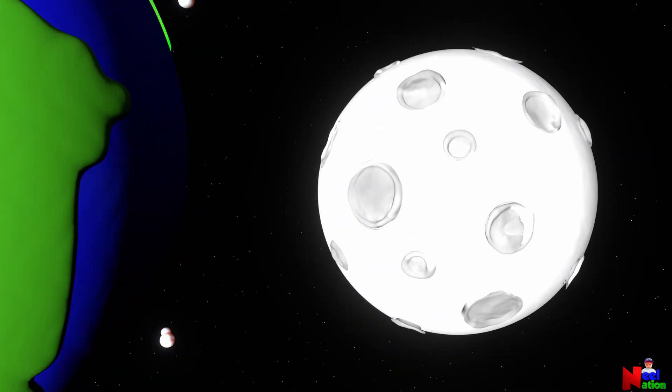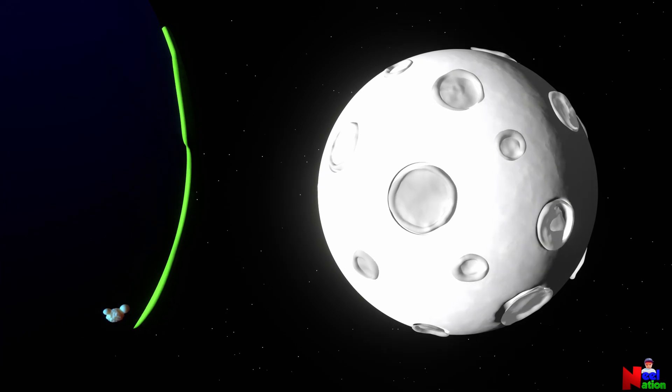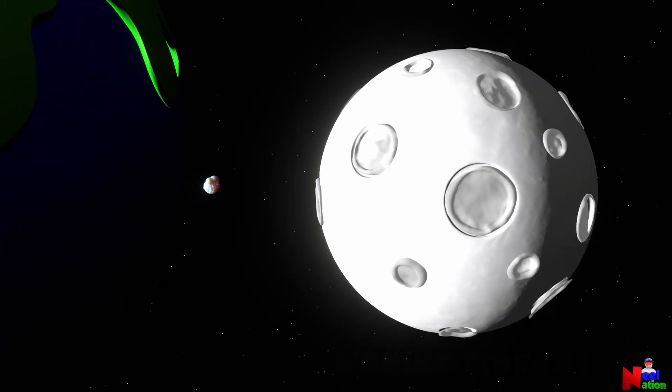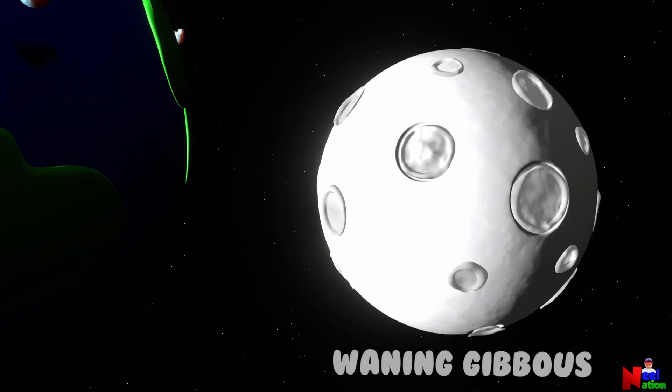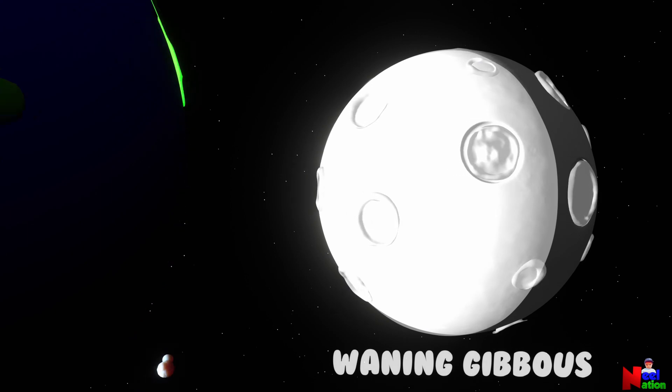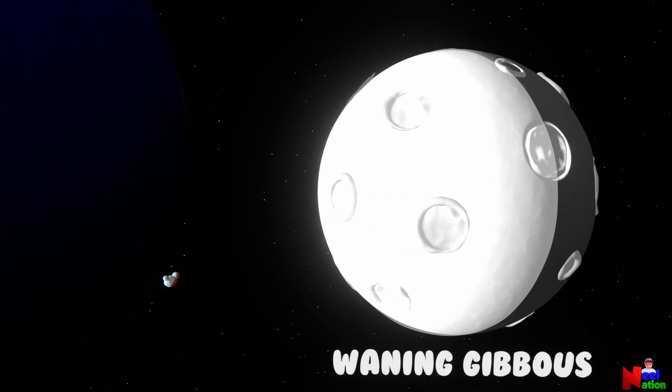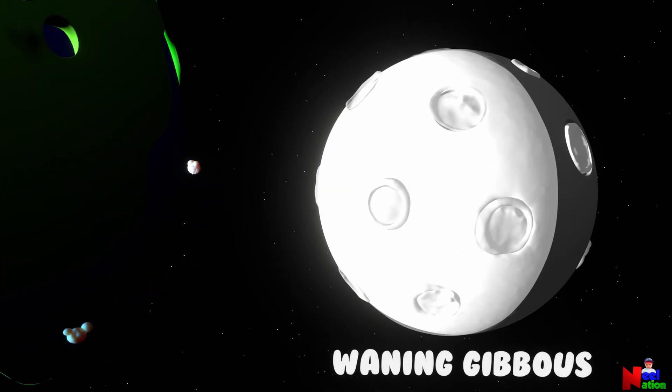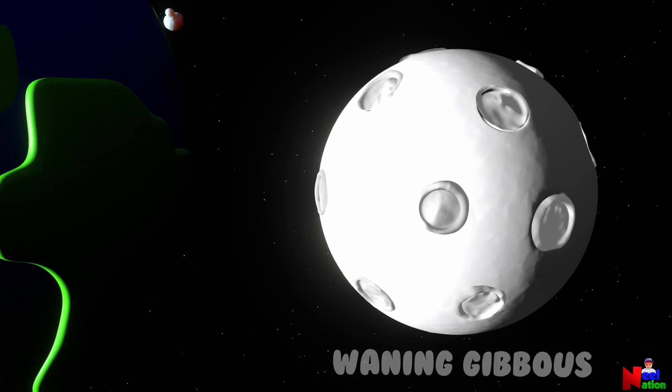The moon enters the waning phase after the full moon. In the next phase, more than half of the moon is lit up. This is called waning gibbous. But the lighted side appears to shrink. That's why it is called waning gibbous.